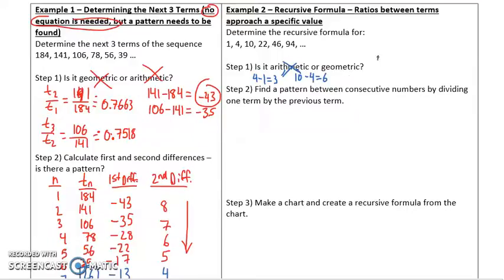And is it geometric? Well, I could go 4 divided by 1. The second term divided by the first one, that's 4. And the third term divided by the second term is equal to 2.5. Clearly not geometric either.